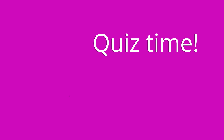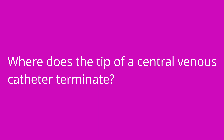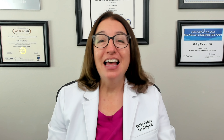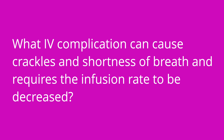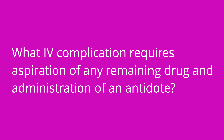Quiz time — three questions. First: where does the tip of a central venous catheter terminate? Answer: in the superior vena cava, just above the right atrium. Second: what IV complication can cause crackles and shortness of breath and requires the infusion rate to be decreased? Answer: fluid overload. Third: what IV complication requires aspiration of any remaining drug and the administration of an antidote? Answer: extravasation.